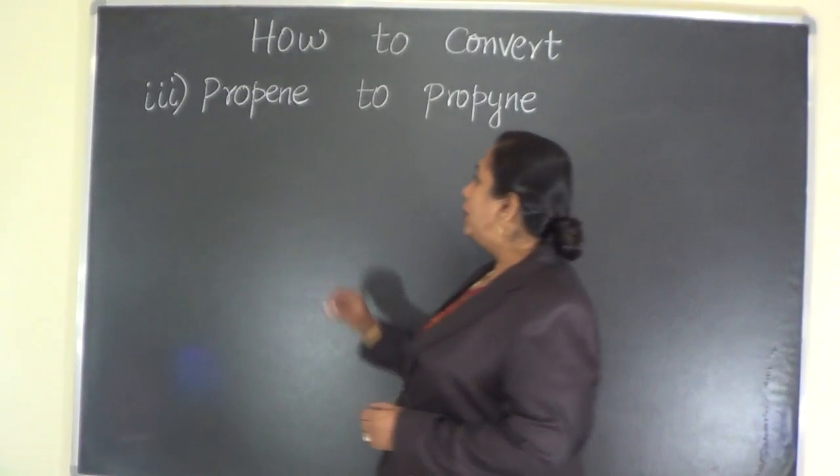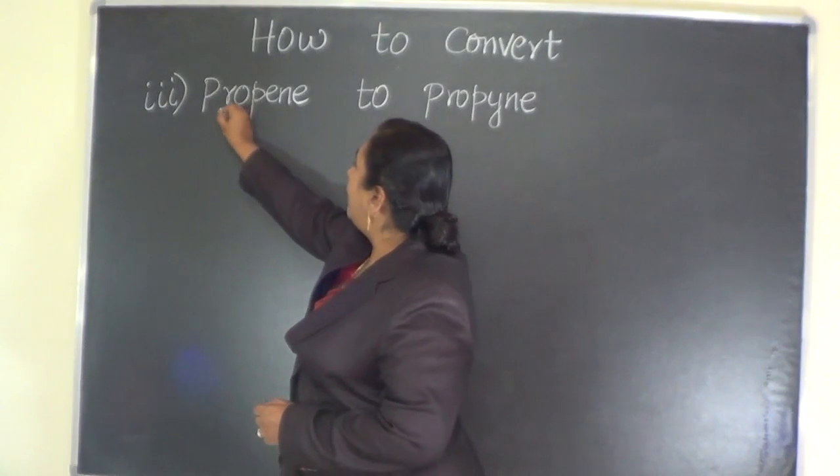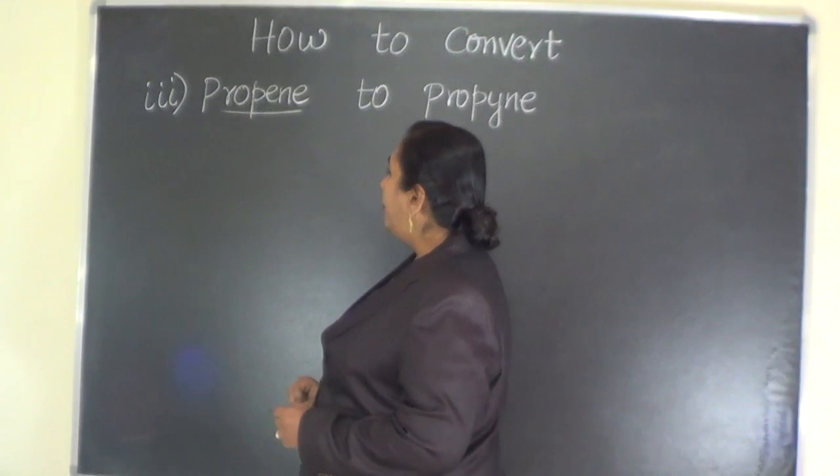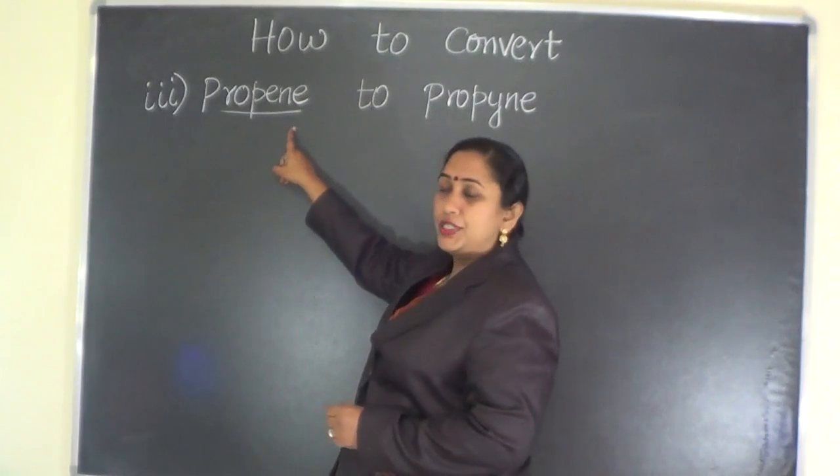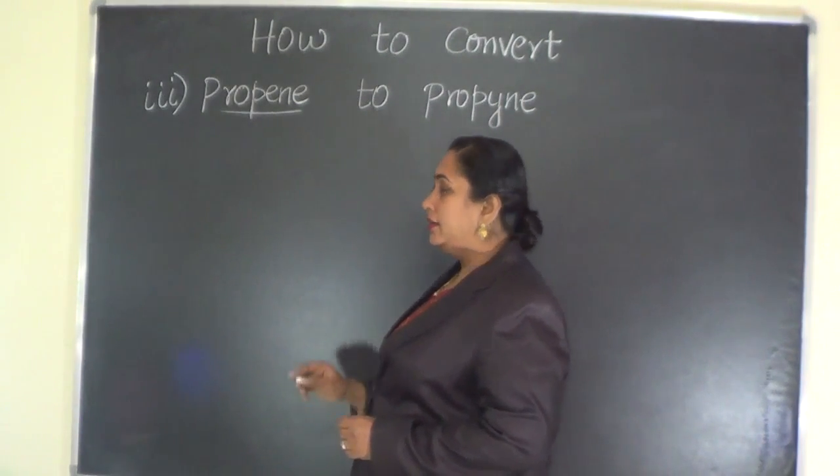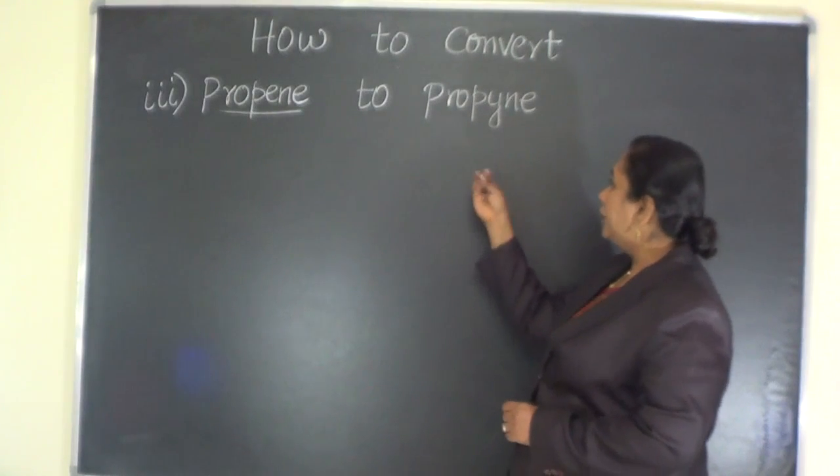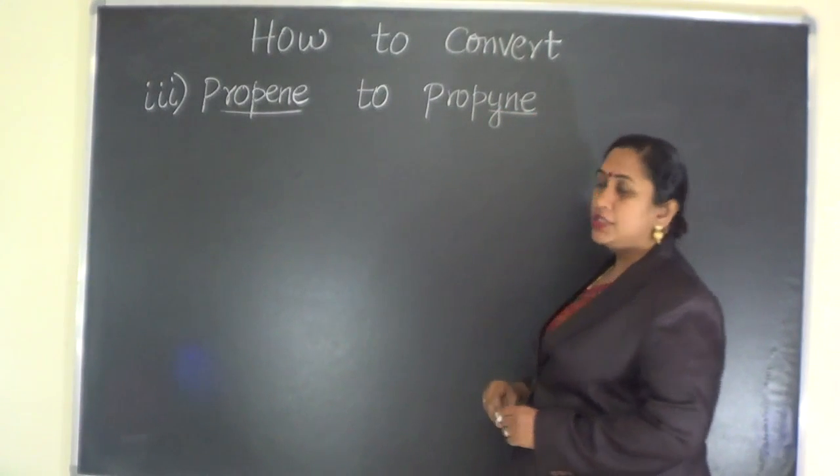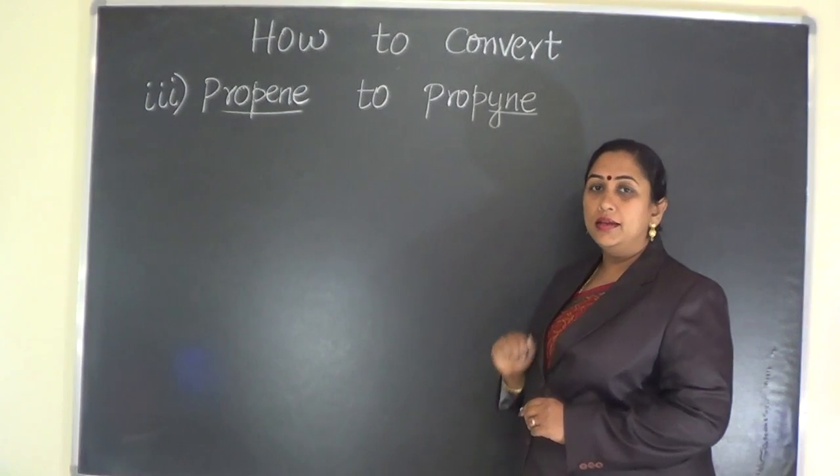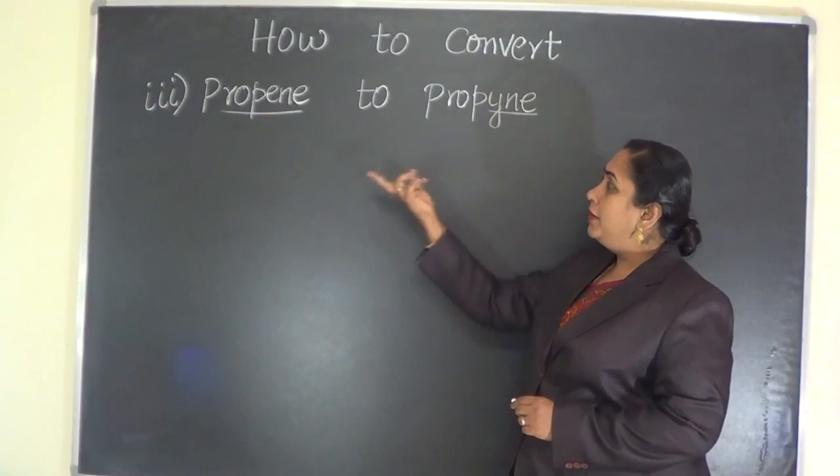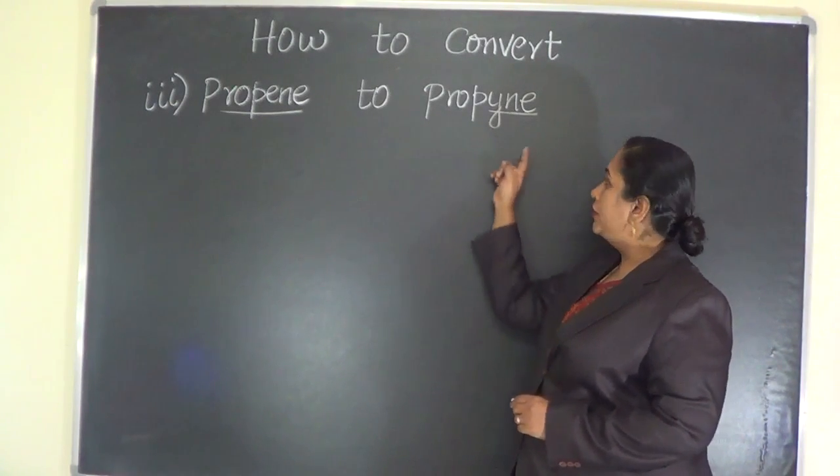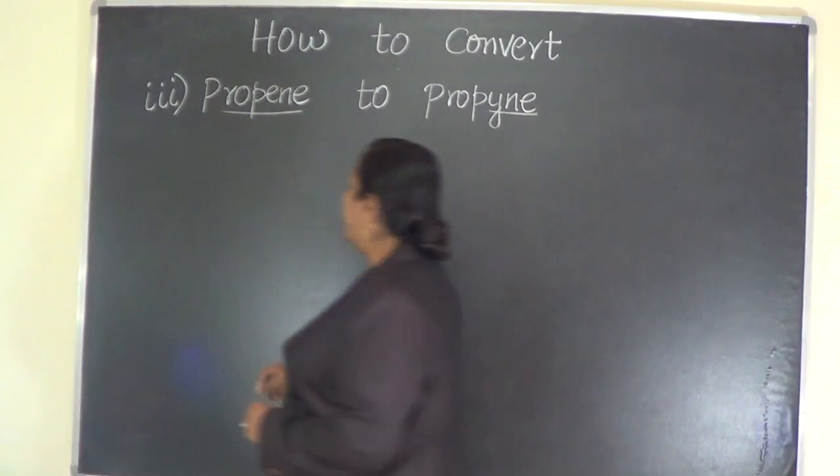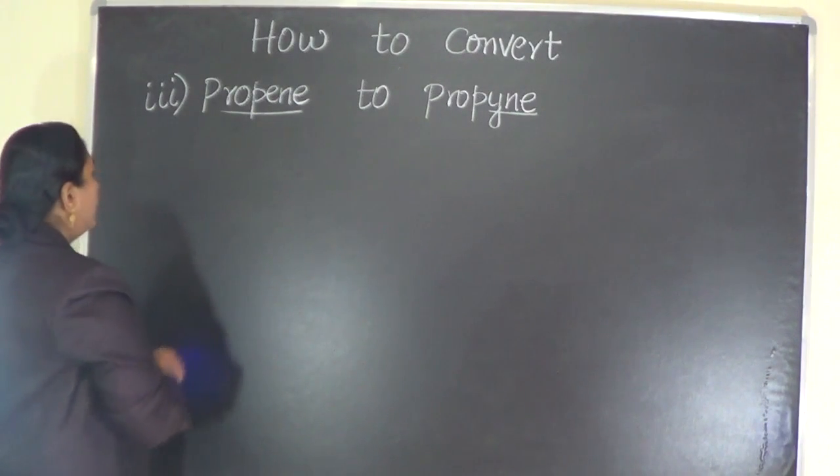Have a proper look at the given compounds. Propene, which is a member of alkene, has to be converted into propyne, which is a member of alkyne. This means a double bonded compound should be converted into a triple bonded compound. Let us see how we carry on this process.